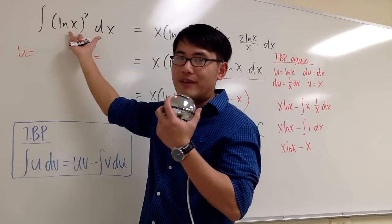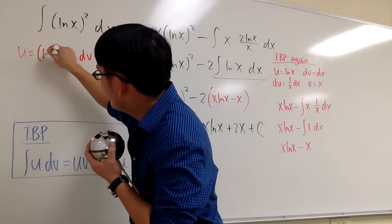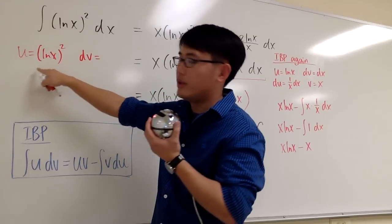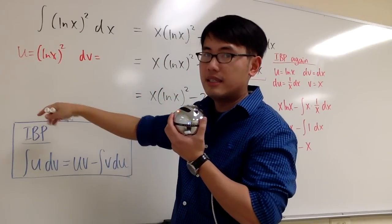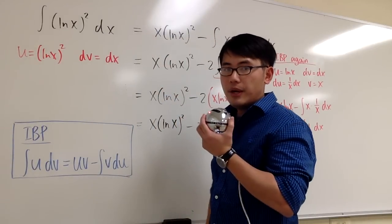So once again, it seems that we have no choice, but we have to write this as u. So I'll put down (ln x)² for the u, so we can differentiate that. And for the dv part, I'll just put down dx.